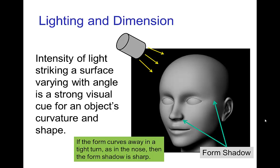Now this is a very important effect in lighting because a lot of the sense of dimension for a form is due to this effect that the intensity of light striking a surface varies with angles. So this is a very strong cue of the curvature and shape.